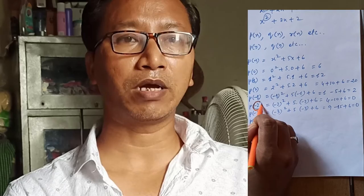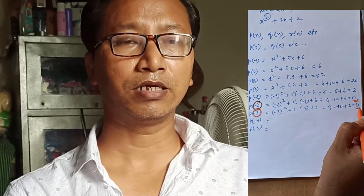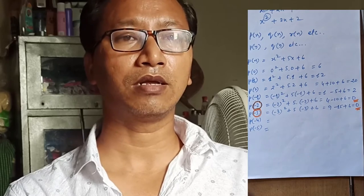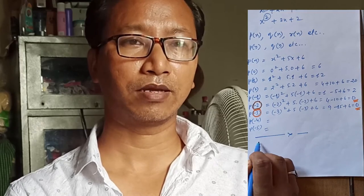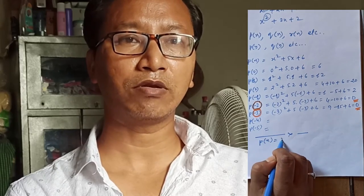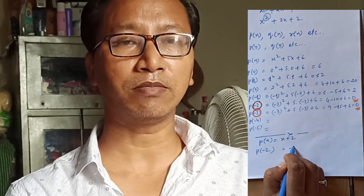Next, zero of a polynomial. In the above example we have seen that for some values of x the value of the polynomial gets zero. In the example p(x) = x squared plus 5x plus 6, for x equal to minus two and minus three the value of p(x) becomes zero. So minus two and minus three are the zeros of the polynomial.